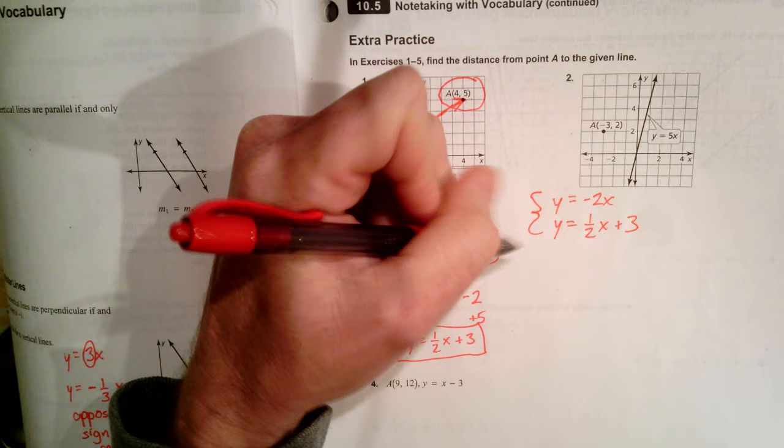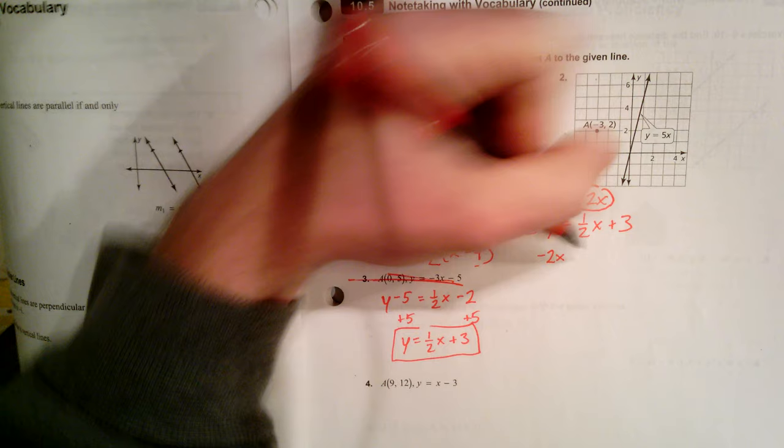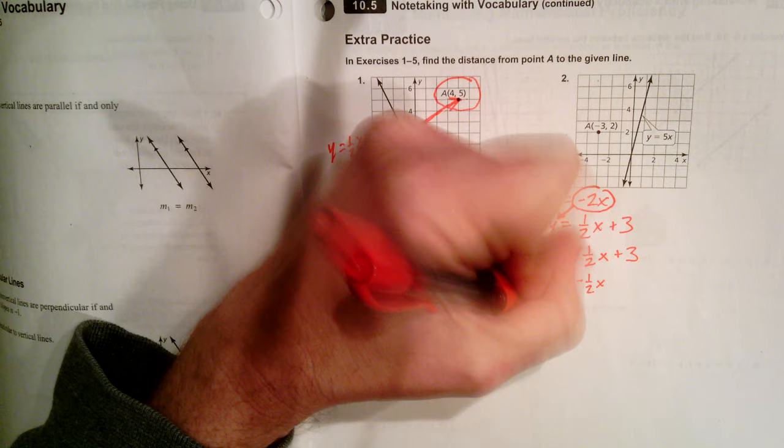Notice that I have both of them in y equals mx plus b format: y equals negative 2x, and y equals 1 half x plus 3. What I can do is I can solve this system: y equals negative 2x and y equals 1 half x plus 3. I want to solve this system.